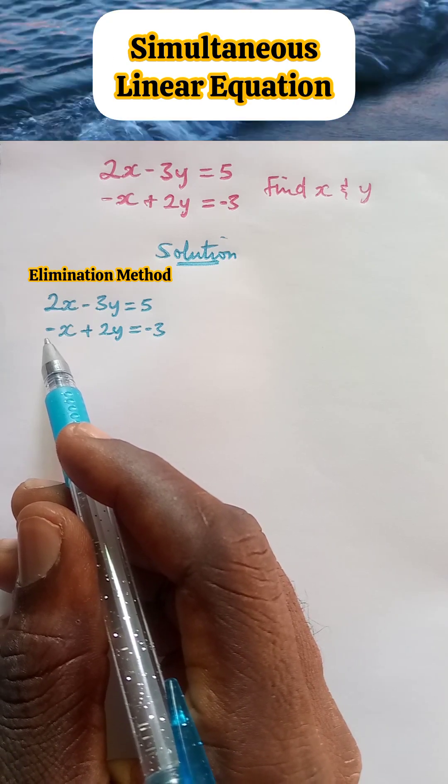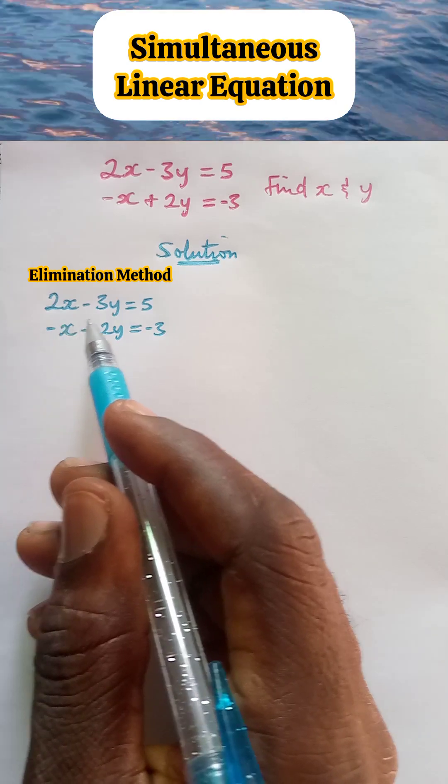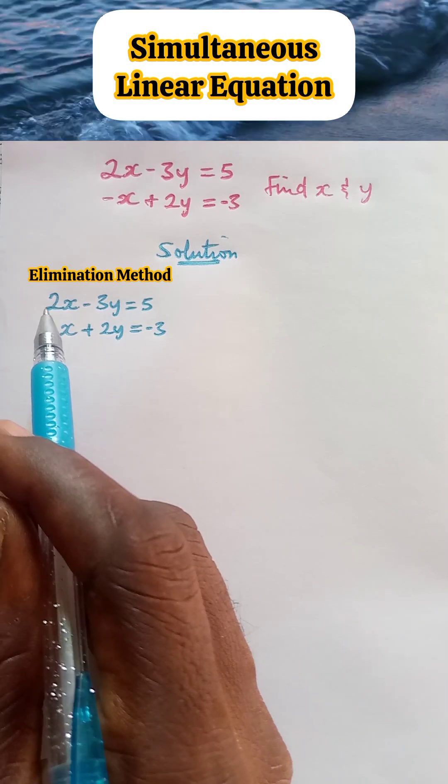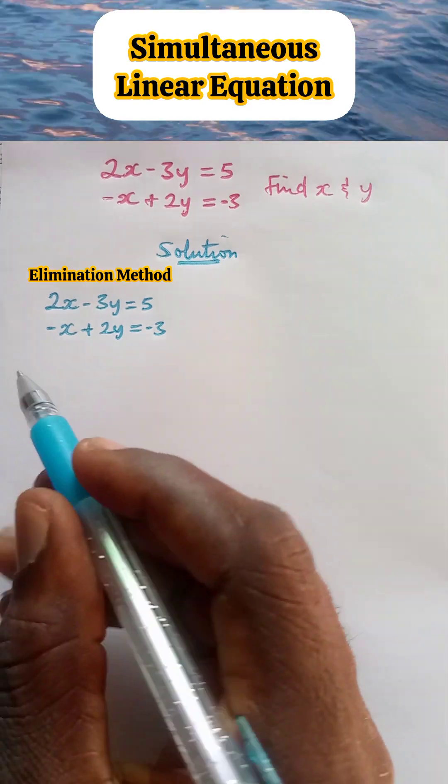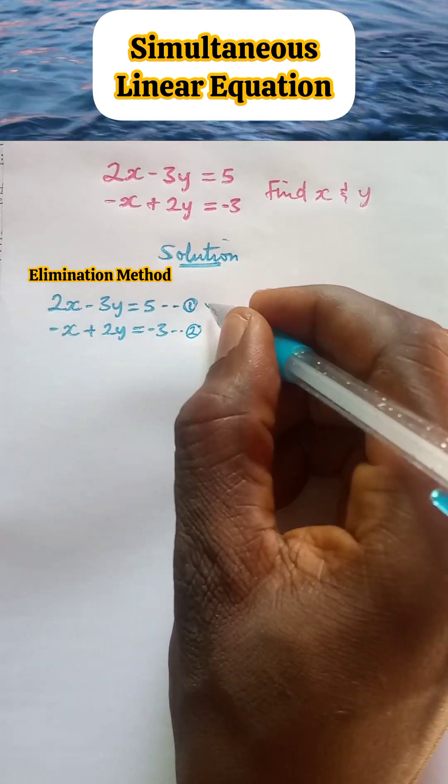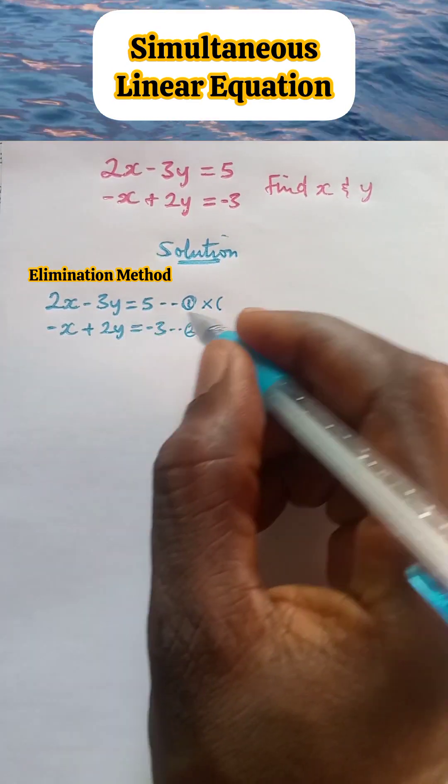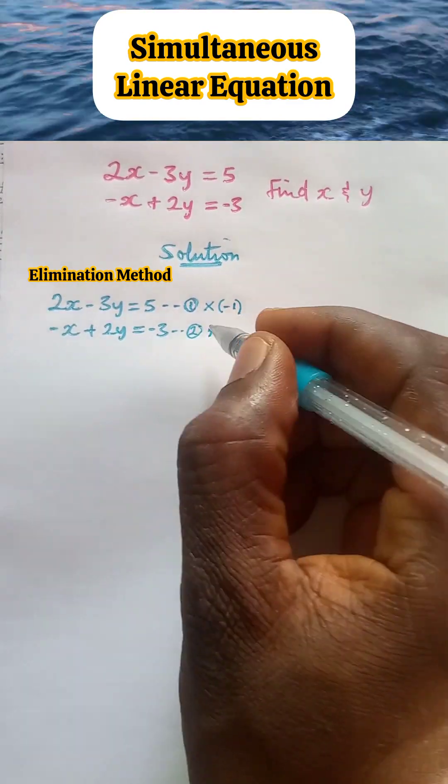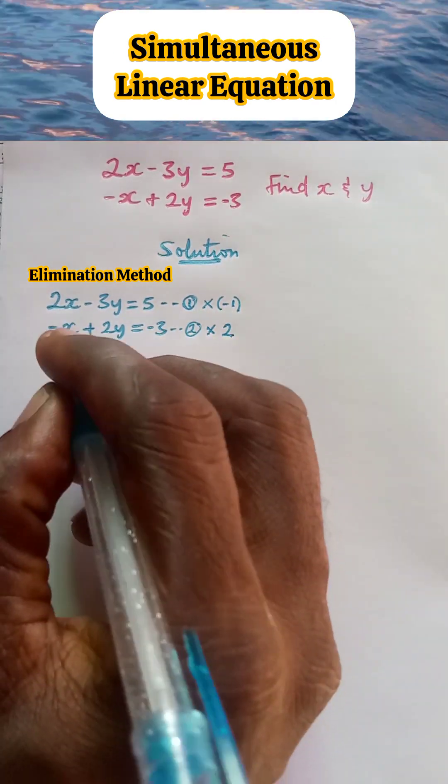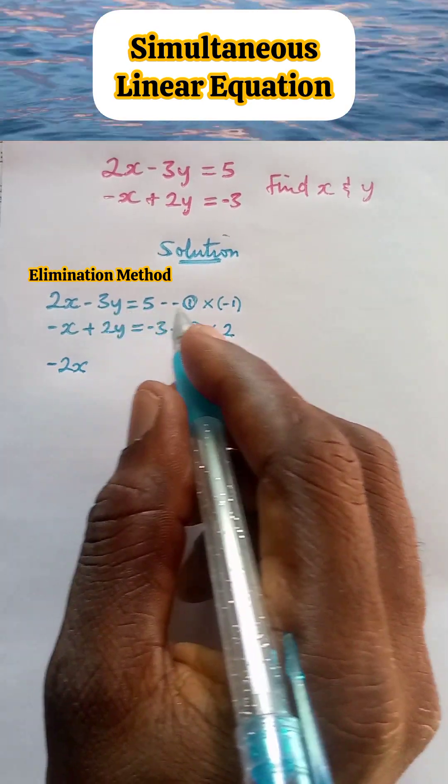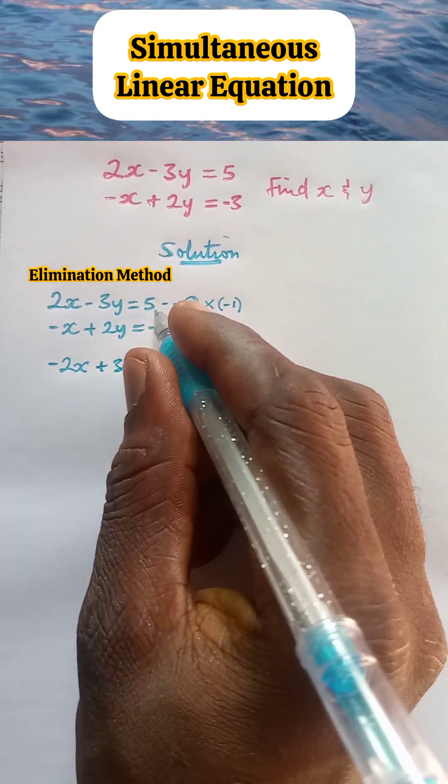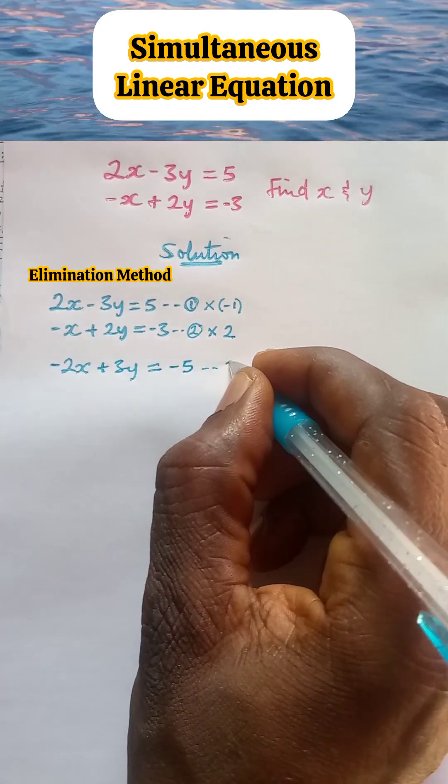One way to do that is to use the coefficient of this x to multiply everything in equation 1, and then use the coefficient of the x in equation 1 to multiply everything in the second equation. So we have this as equation 1 and this as equation 2. We are going to multiply equation 1 by negative 1, which is the coefficient of this x, and equation 2 by 2, which is the coefficient of that first x. Now let's multiply. Negative 1 multiplied by 2x will give us negative 2x. Minus 3y multiplied by minus 1 gives us plus 3y because minus times minus is plus. Equal to 5 multiplied by minus 1 is negative 5. Let's call this equation 3.